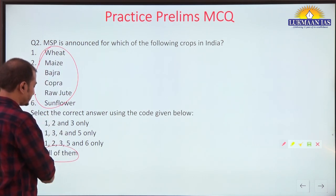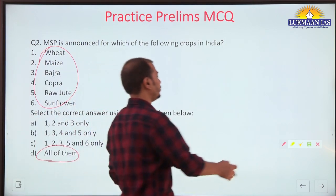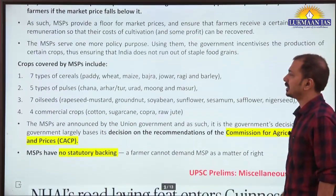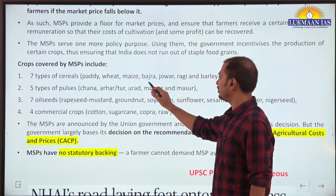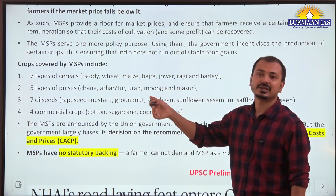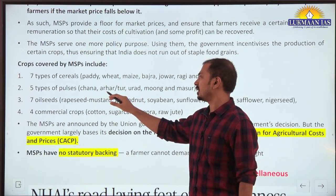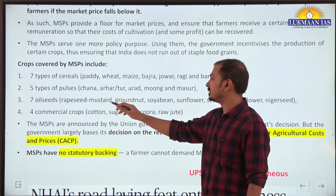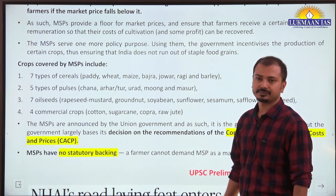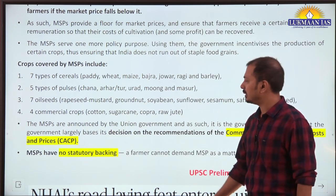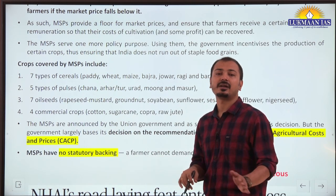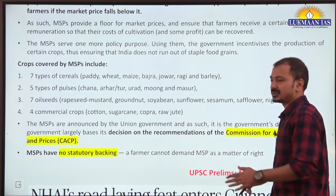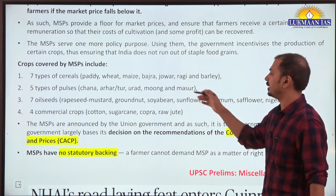All crops are covered in those categories. Seven types of cereals or coarse grains, five types of pulses, several oil seeds, and four commercial crops. You should also know that for sugarcane, the MSP equivalent is called FRP - Fair and Remunerative Price. FRP is announced for sugarcane and MSP for the remaining crops.